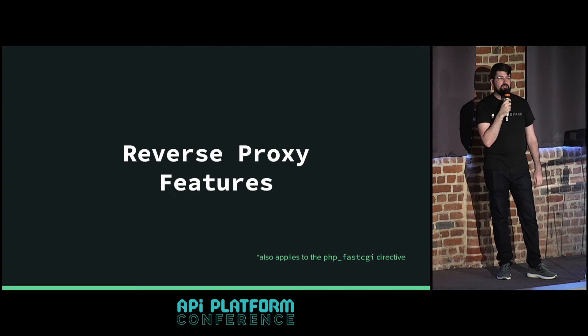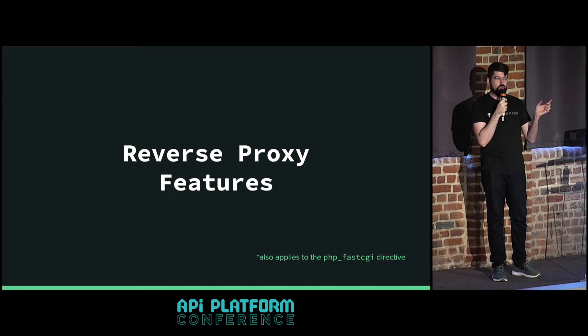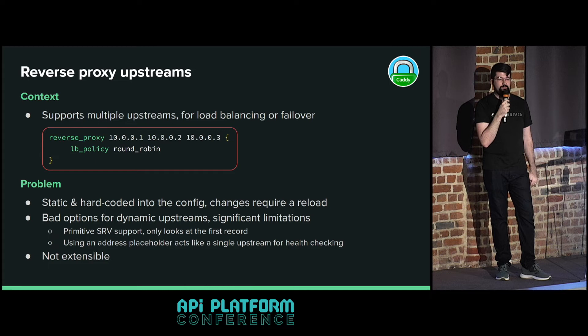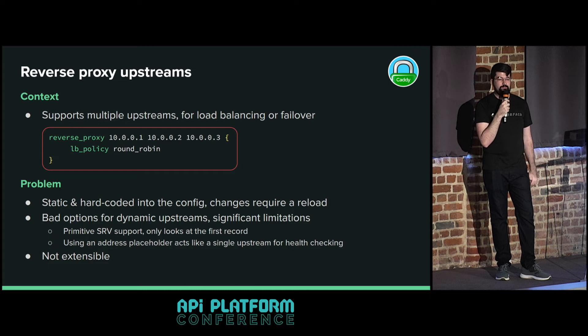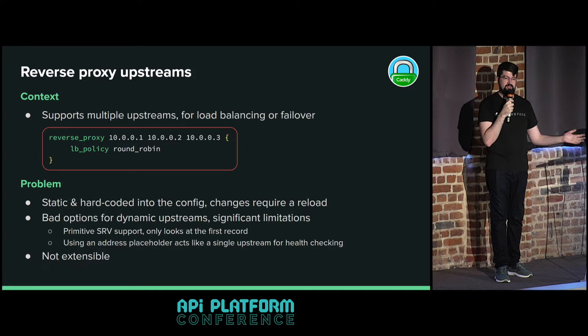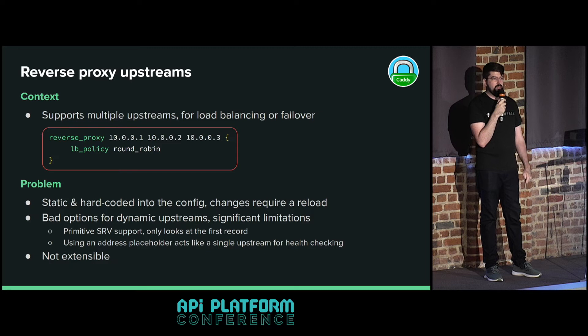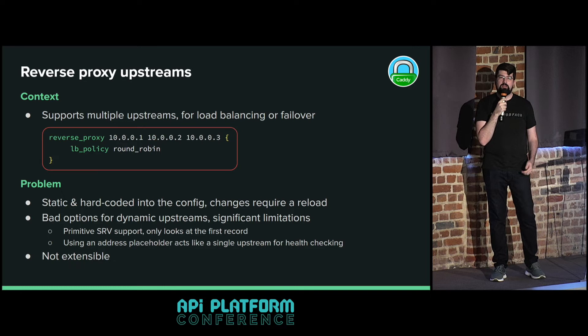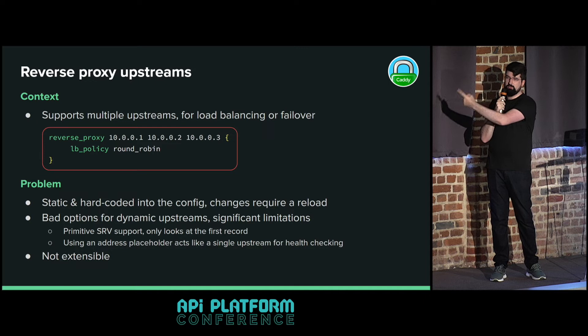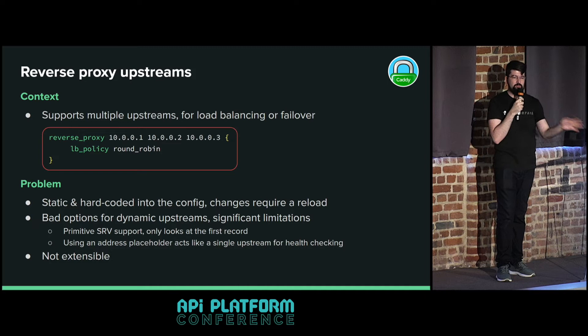Next, reverse proxy features - and all of this also applies to the PHP FastCGI directive, since FastCGI is actually a shortcut for reverse proxy with the FastCGI transport. The reverse proxy supports multiple upstreams for load balancing and failover. Here's an example with three upstreams and round-robin load balancing - Caddy picks upstream one, then two, then three, then back to one, spreading load across multiple upstreams.